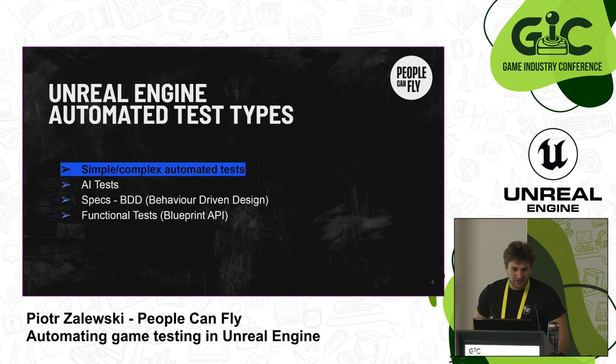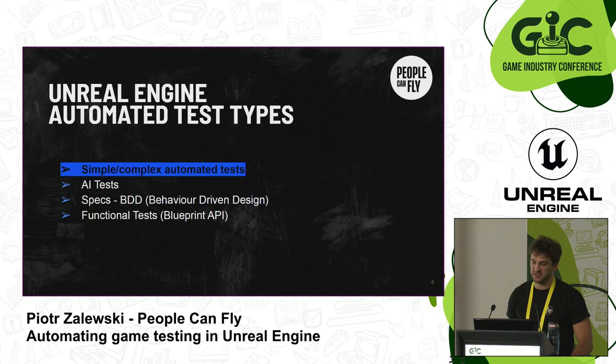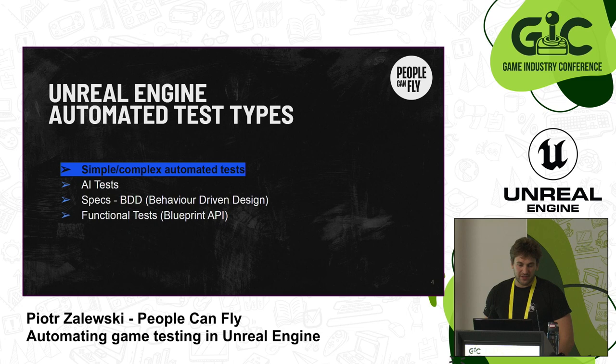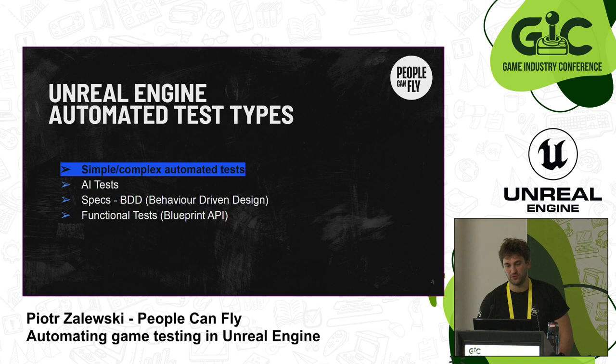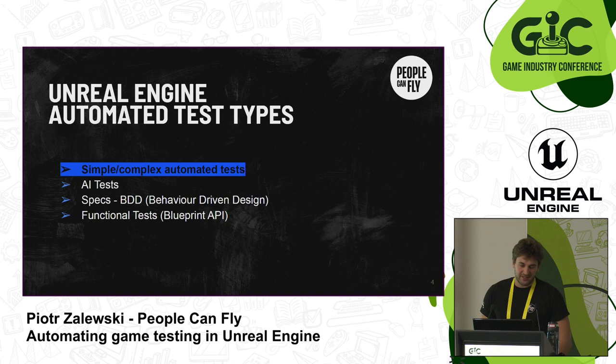Now we are moving to the topic that will address the types and options we have when doing testing in Unreal. Keep in mind that today we are only talking about simple and complex automated tests, but Unreal has other options. There are AI tests specifically designed to deal with AI, specs which follow behavior-driven design, and functional tests which allow you to do your tests using Blueprint API — a good option for people who are not keen on programming.